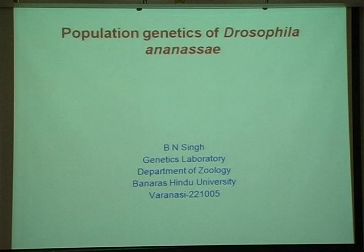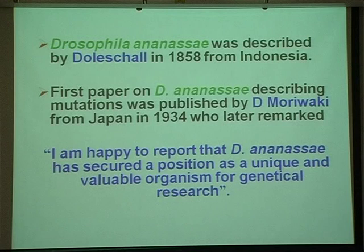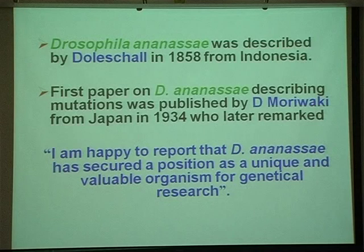This species was described by De Meijere in 1858 from Indonesia. The first paper on D. ananassae was published by Moriwaki from Japan in 1934, and at that time Moriwaki remarked: 'I am happy to report that D. ananassae has secured a position as a unique and valuable organism for genetic research.' He made this prediction at that time.